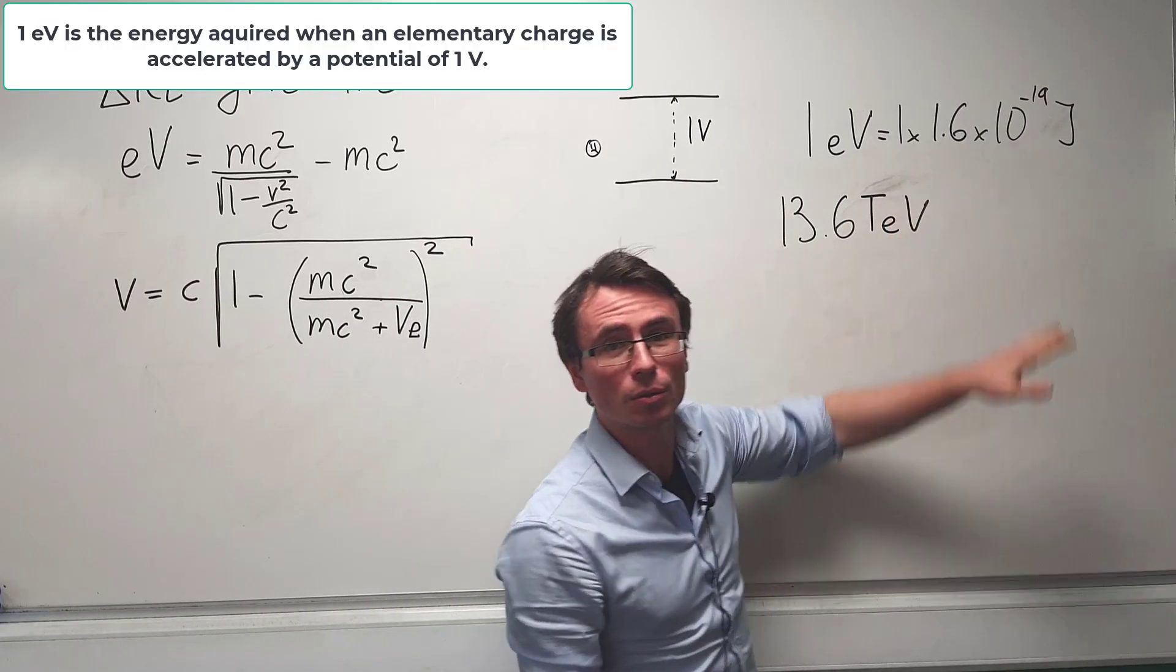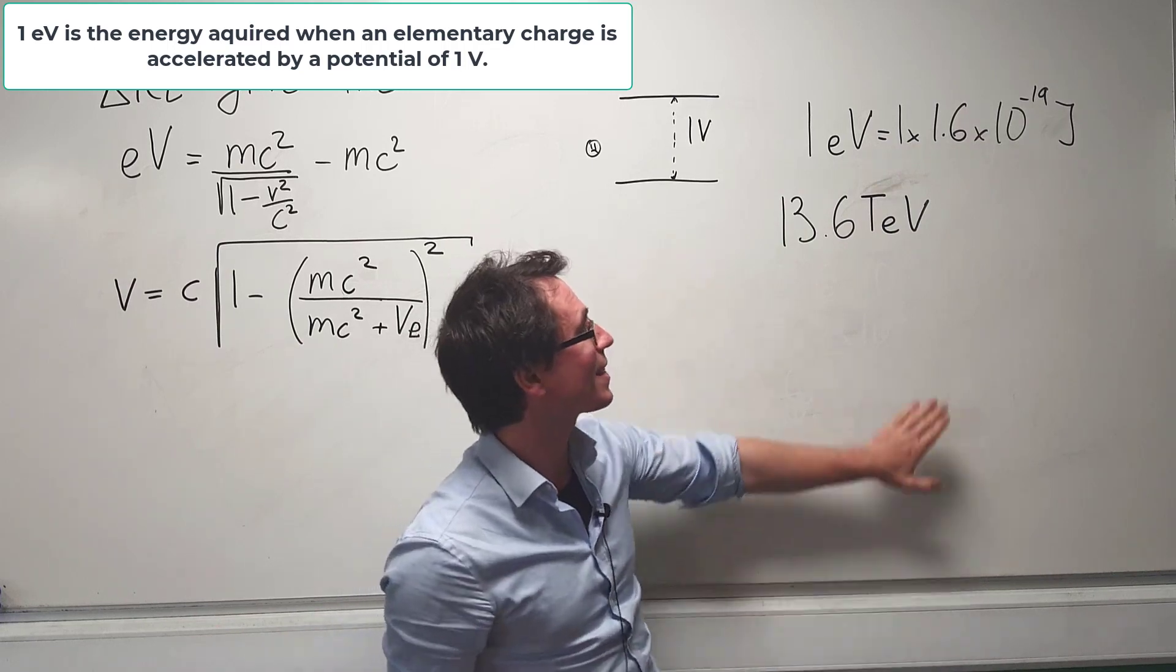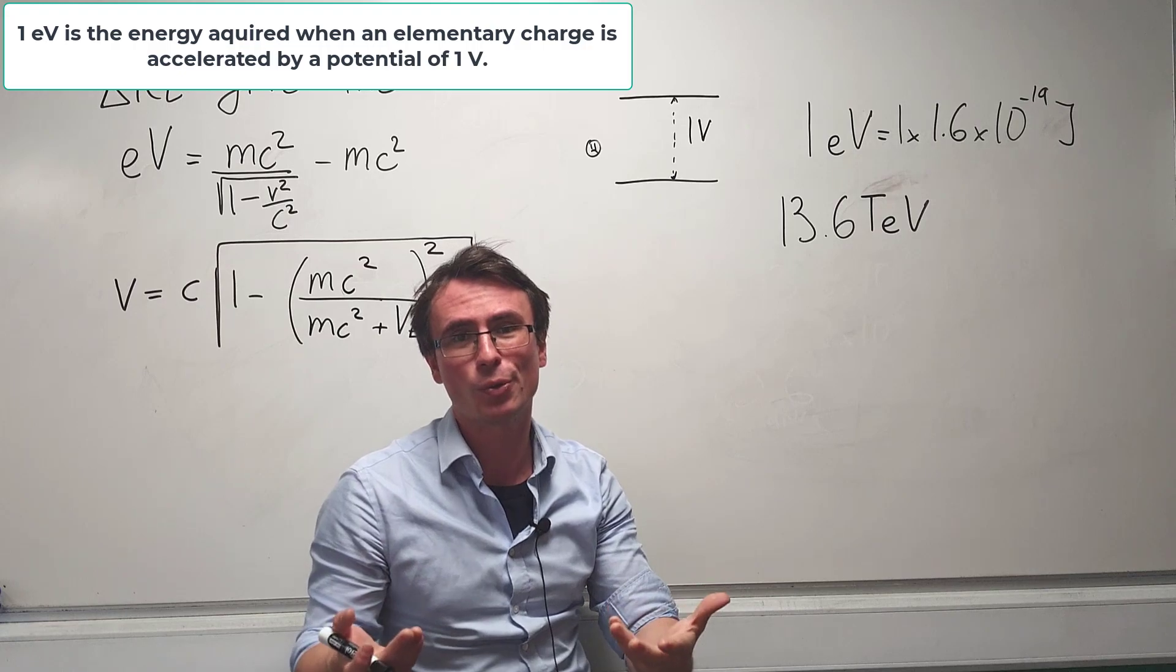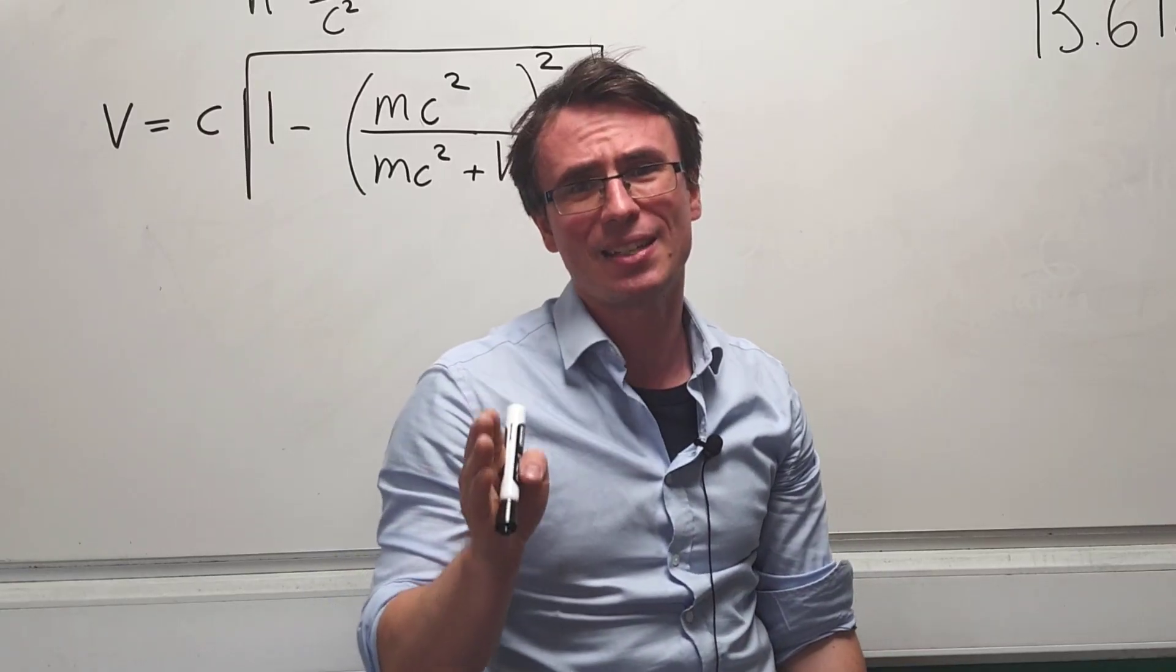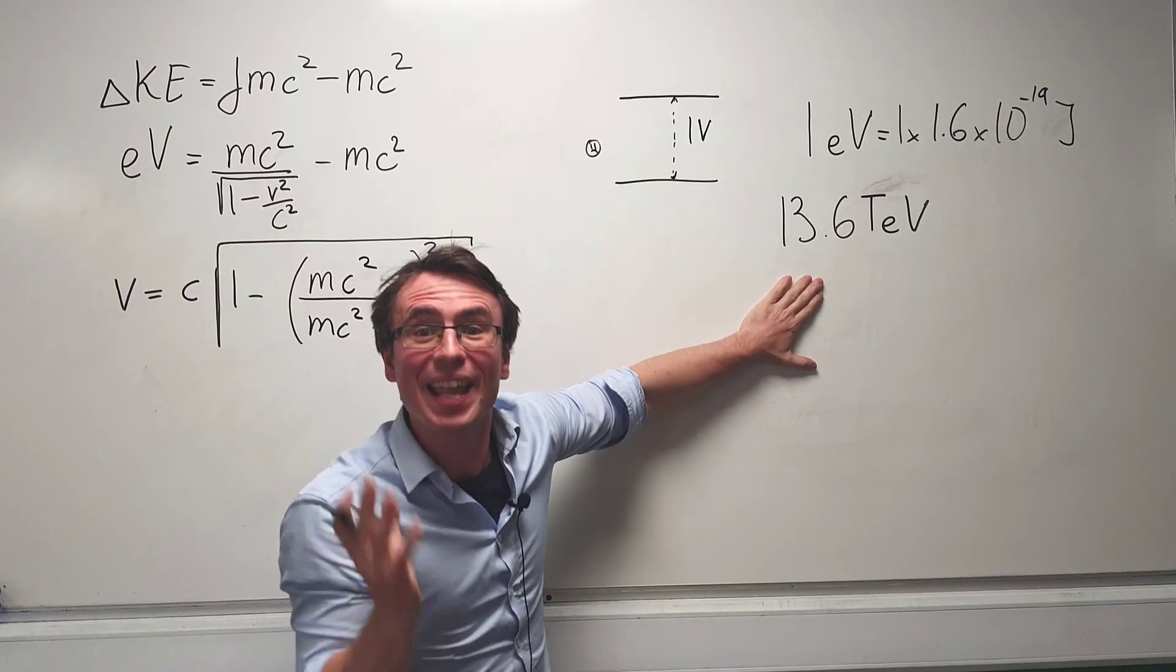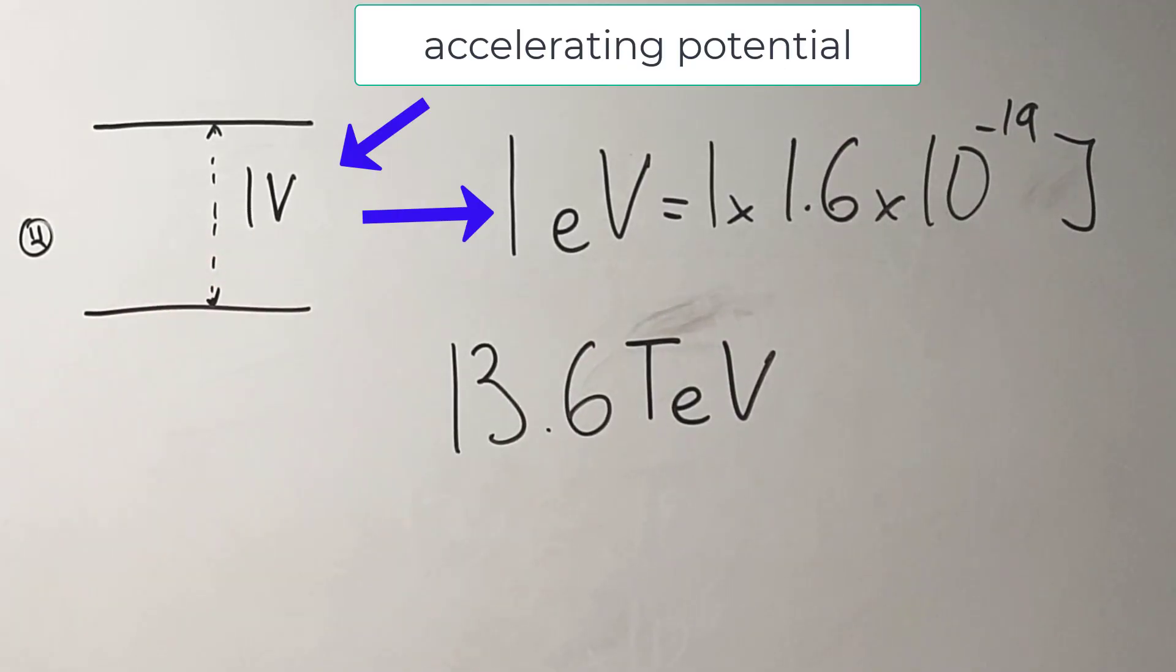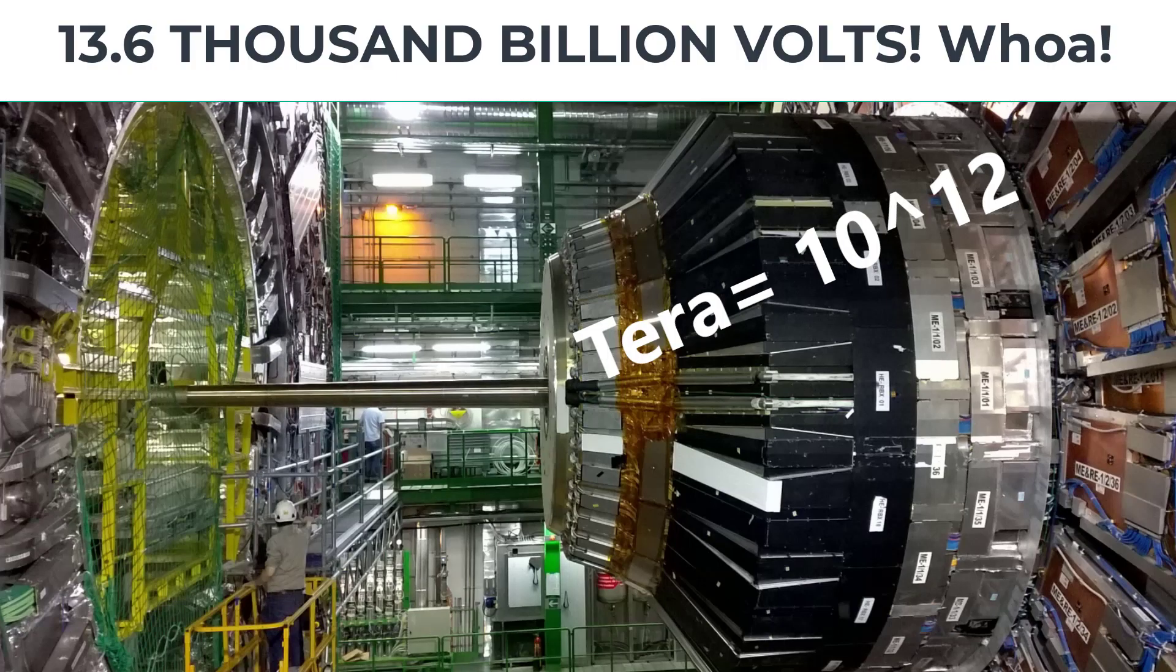One electron volt is equal to just 1.6 times 10 to the power of minus 19 joules. This is a very tiny number. 13.6 tera electron volt is the equivalent of replacing this one volt with 13.6 times 10 to the power of 12 volts, which is equivalent to a thousand billion volts.